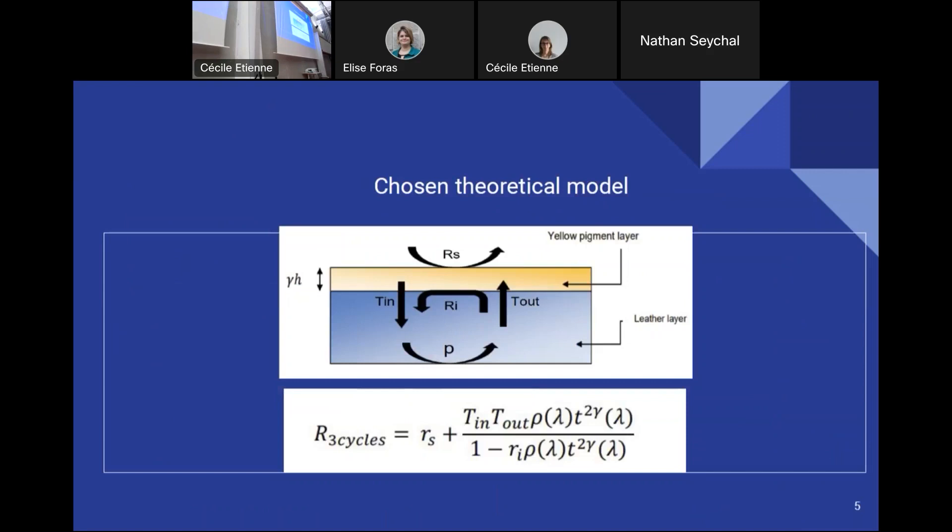The thickness of the yellow leather varies over time as the leather gets more yellowish. So the reflectance after three aging cycles is given by this formula. In this formula, the RS, RI, T-in, and T-out are known values which depend on the fabric and also on which direction the light enters and exits.